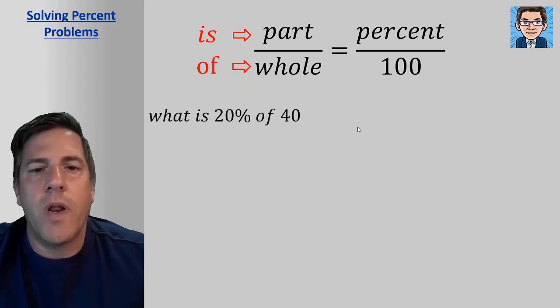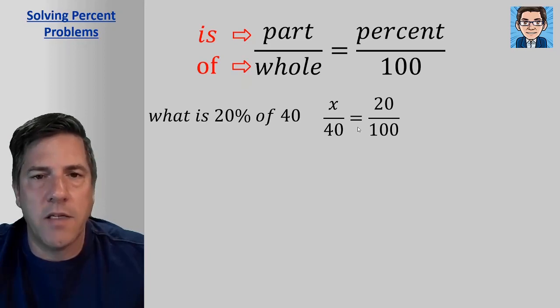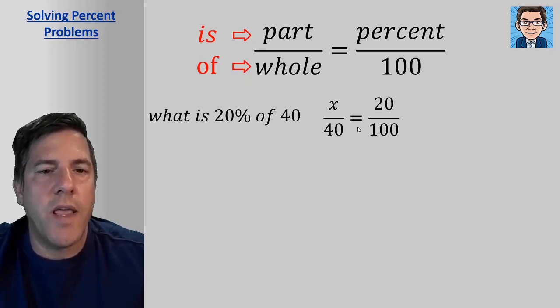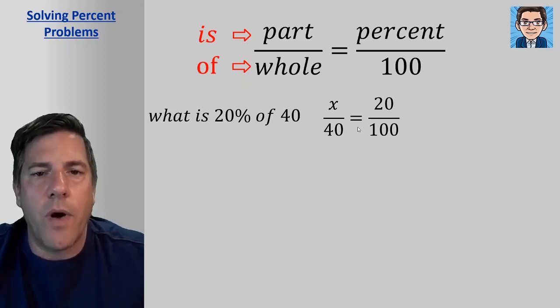So what is 20% of 40? So the way we would set this up is x over 40 equals 20 over 100. We don't know what the part is, so the part is x. The whole is 40. The percent is 20, and it's always over 100 for a percentage. So the is over the of, it says what is. So we don't know the is part. And the of, it says of 40. So that just gives you a little trick as far as what goes in the part and what goes in the whole. Whichever one helps you to get this right is fine.